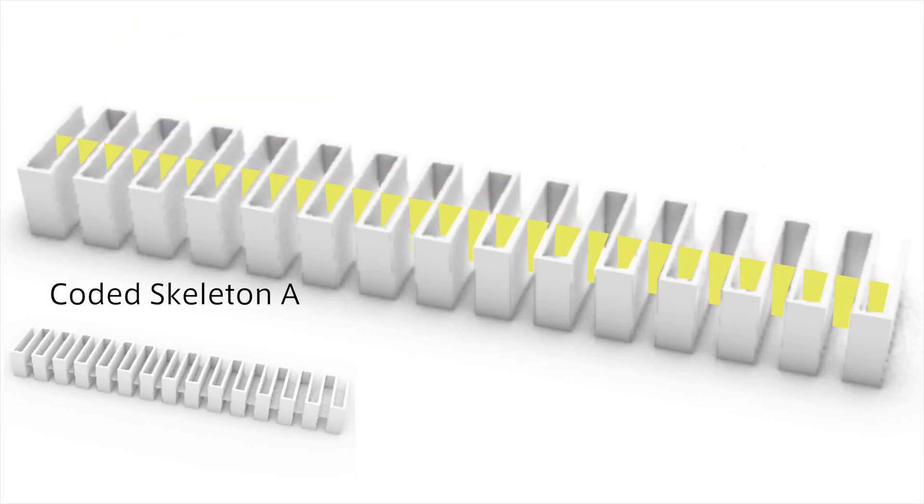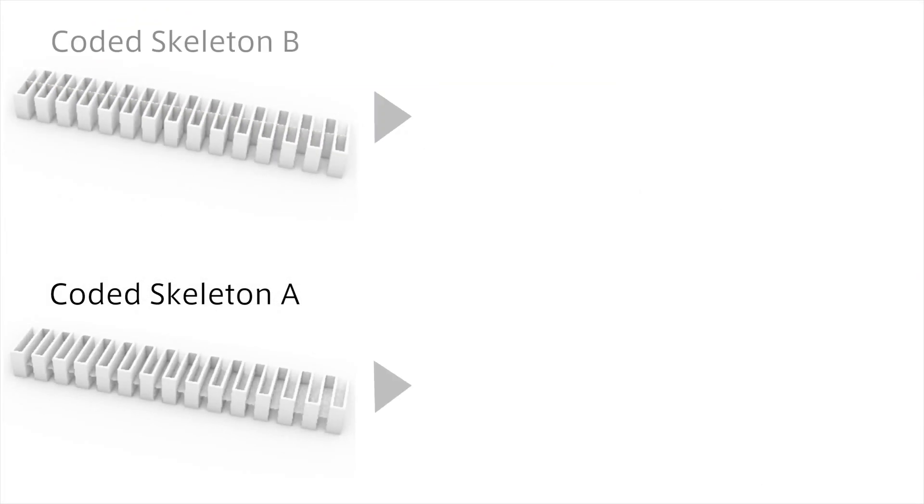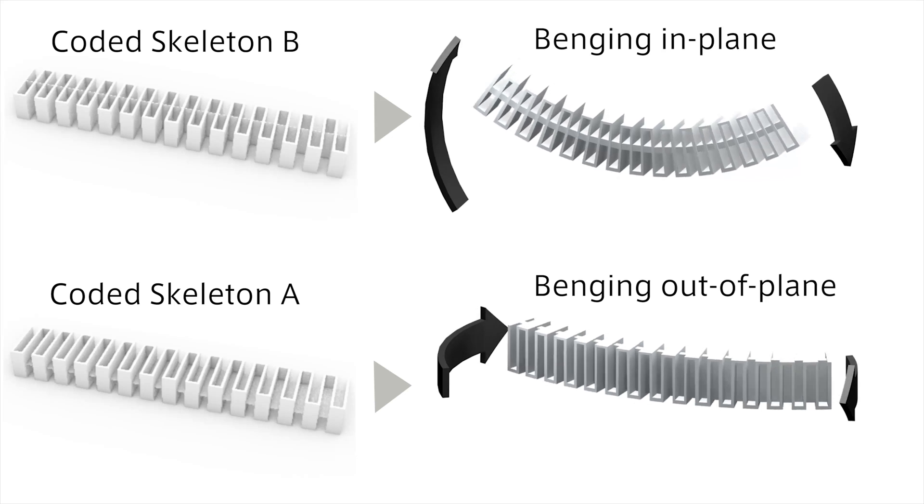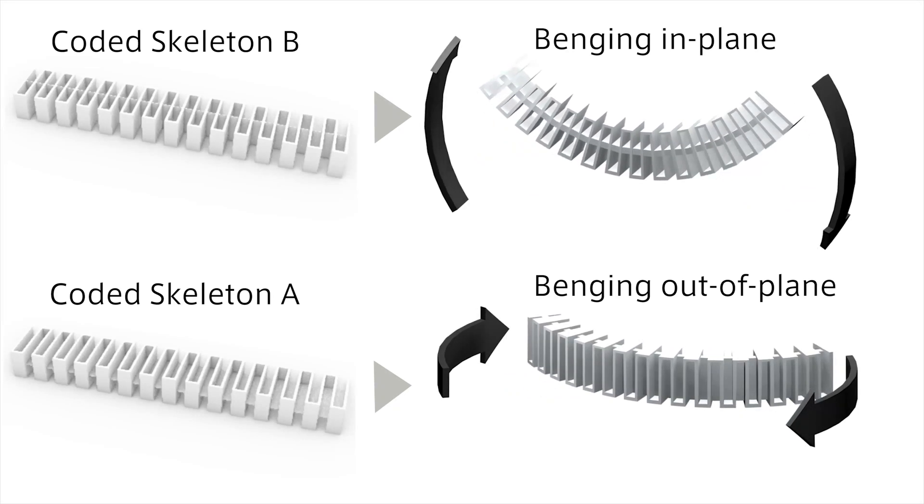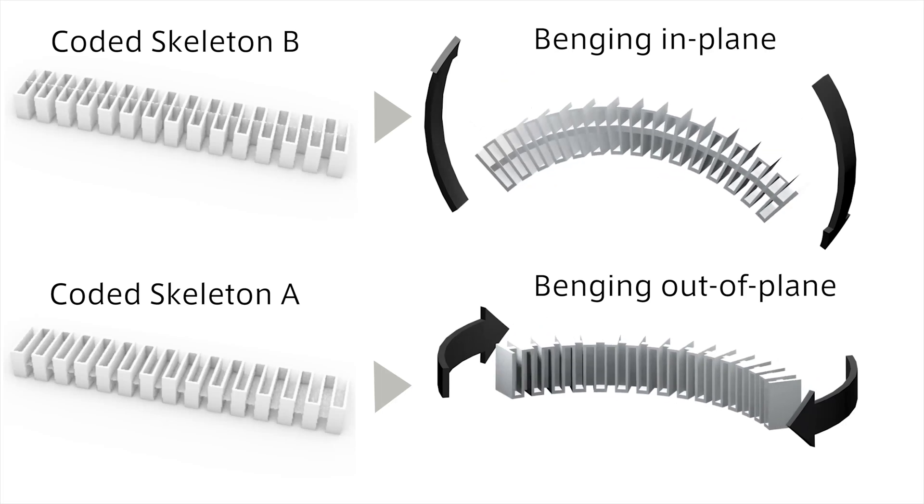We can isolate the deformation of the lamina emergent torsion structure by inserting a thin shell into the lamina emergent torsion structure, which is a famous curved structure. We evaluated this characteristic using eigenvalue analysis.